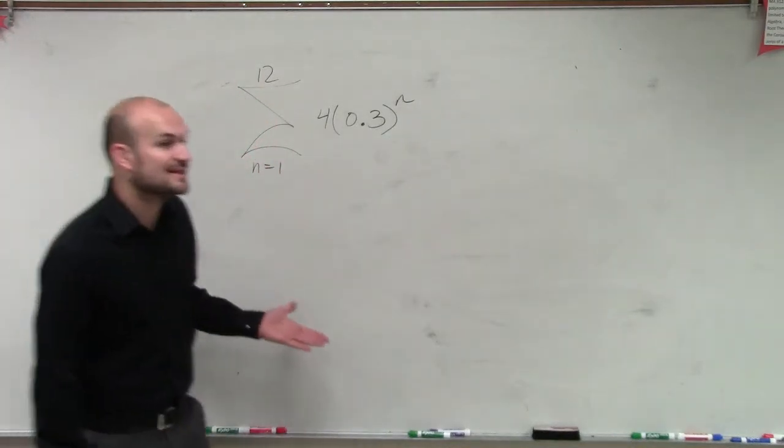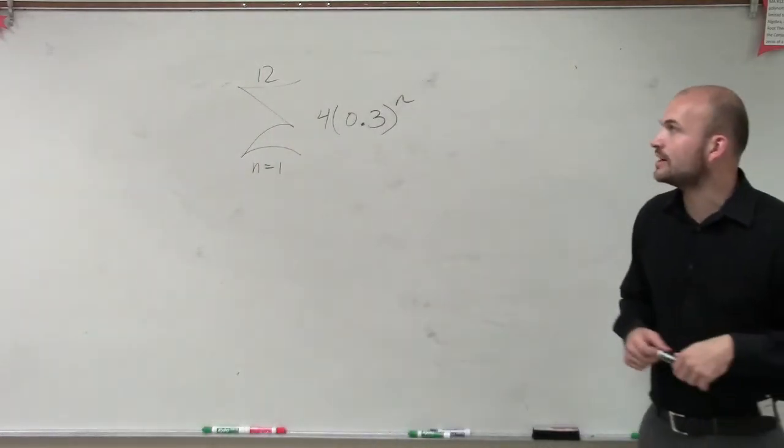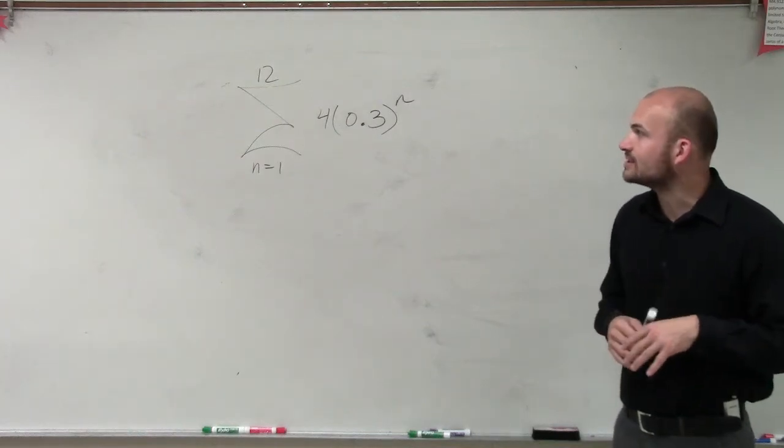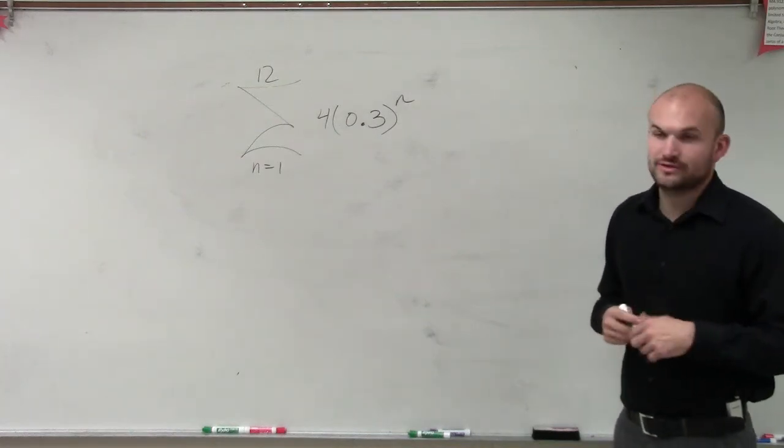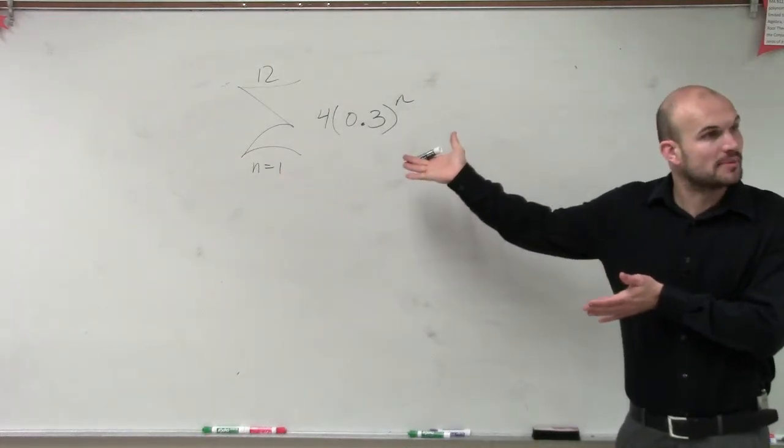So here we go. We have the series n equals 1, summation to 12, and the rule is going to be 0.3 raised to the n. Now, we automatically see this rule, and we notice that this is in a geometric form, right? This is not arithmetic, correct?